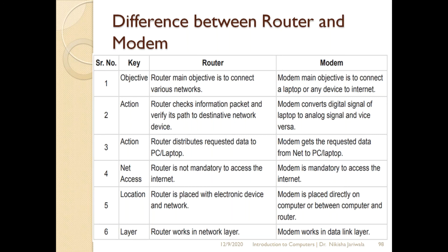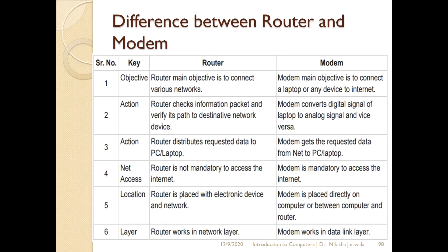The fourth difference is net access. The router is not mandatory to access the internet. But the modem is mandatory to access the internet. If you only want to create a local network without connecting to an external network or the internet, you can use just a router. But if you need internet access, you must have a modem, because the modem must be in the middle to connect your computer to the internet. The router is only needed when you have to connect two different or multiple networks.